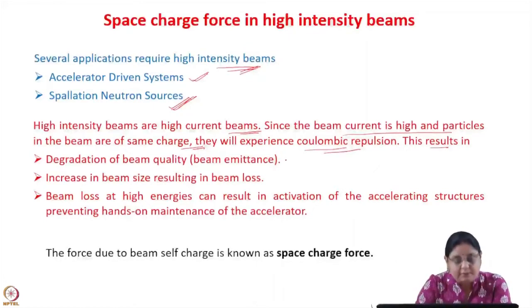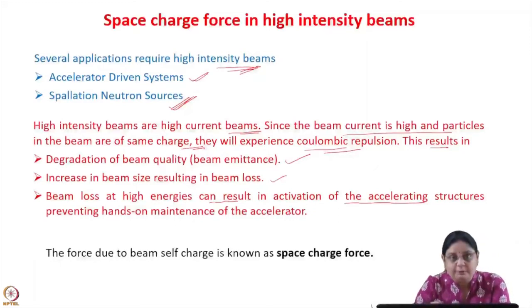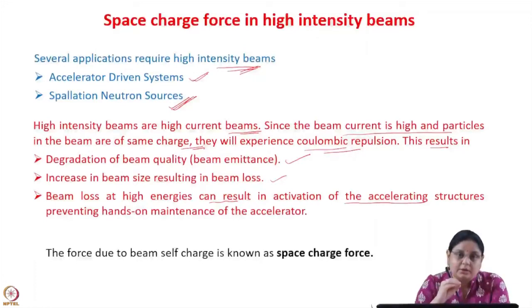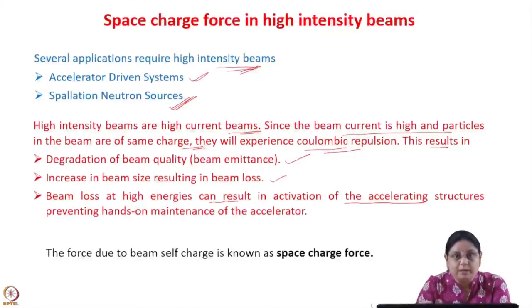Coulombic repulsion results in degradation of the beam quality — the beam emittance will increase and beam size will increase, resulting in beam loss. Since these forces are repulsive, the beam size tends to increase, and if the beam hits the aperture, it will be lost. Beam loss at high energies can result in activation of the accelerating structures, preventing hands-on maintenance of the accelerator. If there is beam loss at higher energies, this can activate the accelerating structure making it radioactive, so that even after the accelerator is shut down, people will not be able to enter for hands-on maintenance. So beam loss at higher energies is undesirable. The force due to the beam self-charge is known as the space charge force.